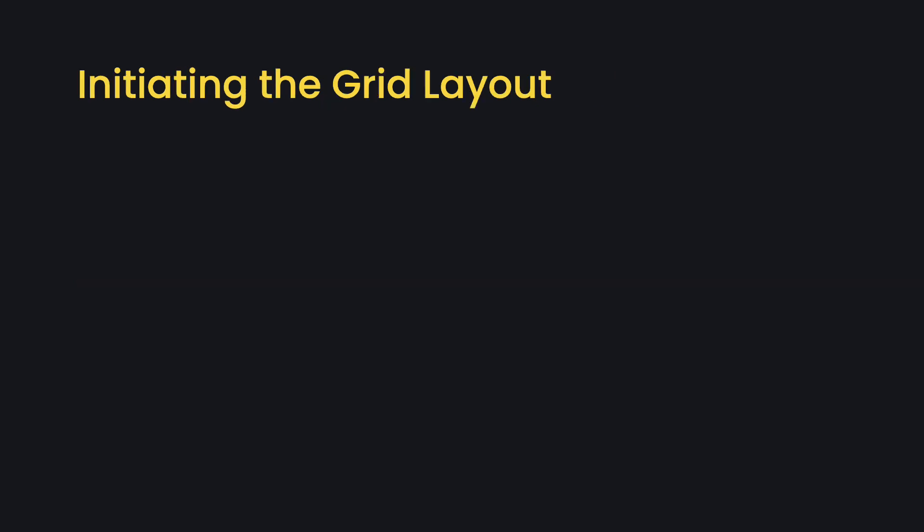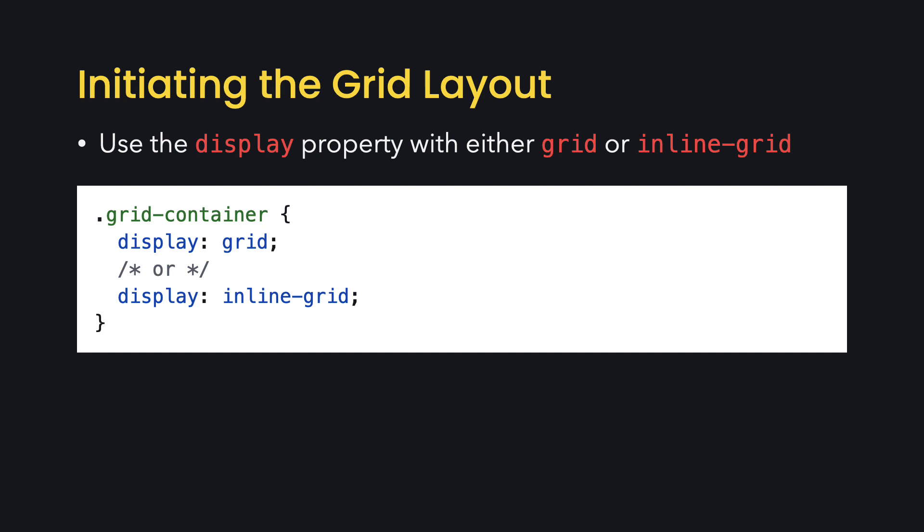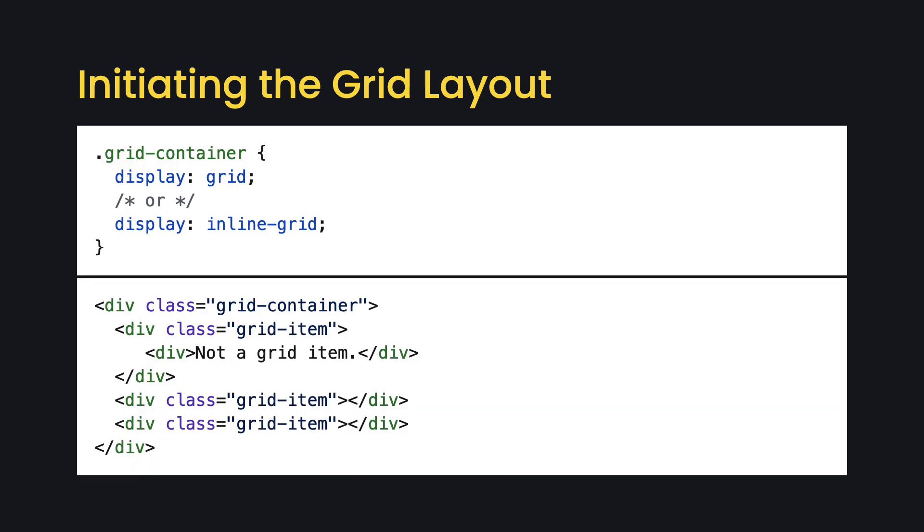To initiate a grid layout, start with the Display property using one of two options: Grid or Inline Grid. Apply the style to the Grid container, which is the parent element. Only the direct child elements will then be designated as the grid items and will be affected by the grid layout properties.